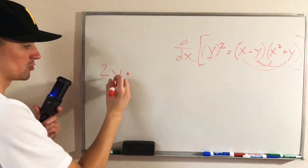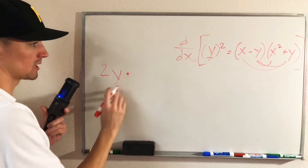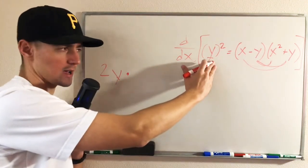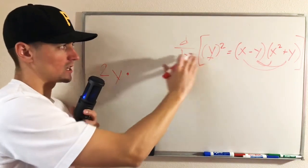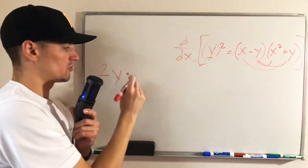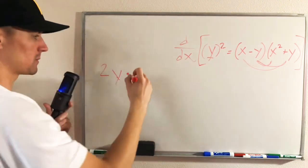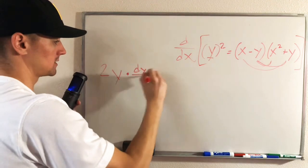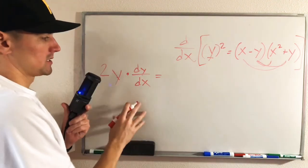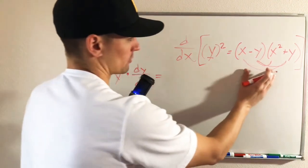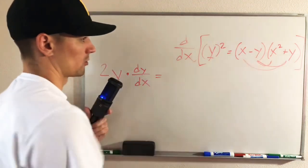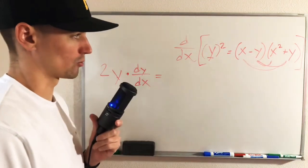And then by chain rule, we need to multiply that by the derivative of our inside function. Well, if our inside function is y, we're taking the derivative of y with respect to x — the derivative of y with respect to x is just going to be dy/dx. This is going to be equal to the derivative with respect to x of this entire right side of our equation.